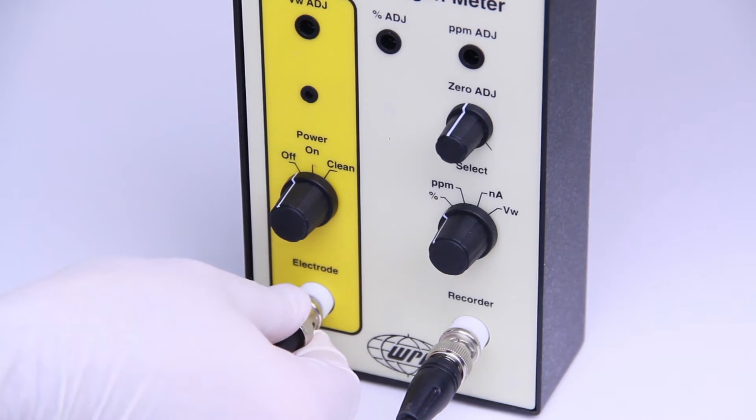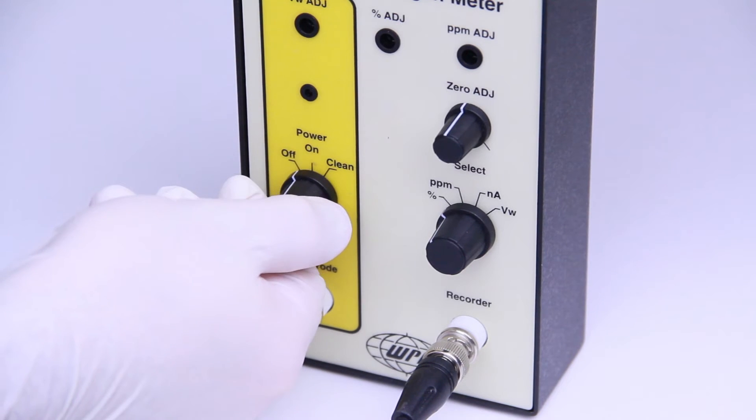On the iso-2, set the select switch to nanoamps and the power switch to on.